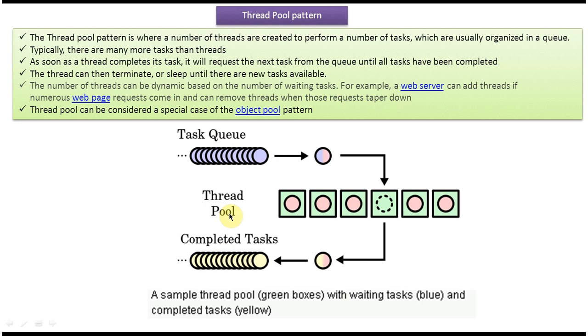The ThreadPool contains a number of threads. Each thread will take a task from the Task Queue and perform the task. Once the task is completed by the thread, that task will be sent to the Completed Task Queue.